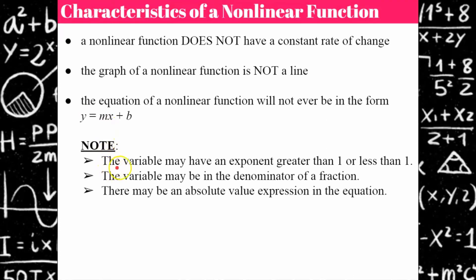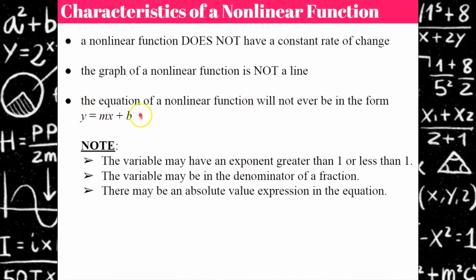The variable may have an exponent greater than one or less than one — it could have a negative exponent — making it a non-linear function. The variable may be in the denominator of a fraction, such as 2 over x — non-linear. There may be an absolute value expression in the equation — non-linear. So if it's anything other than y equals a constant times x plus a value, it's non-linear. You'll learn more about these types of functions in a future math class.